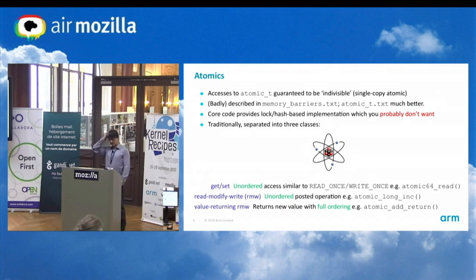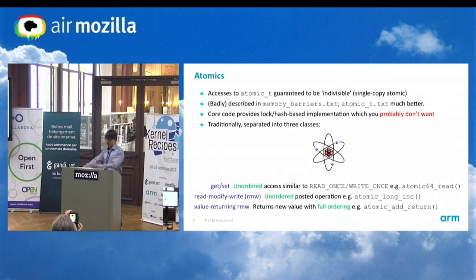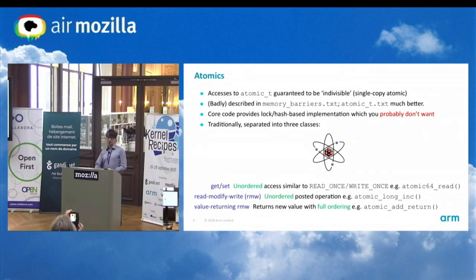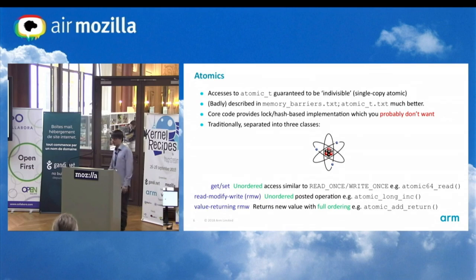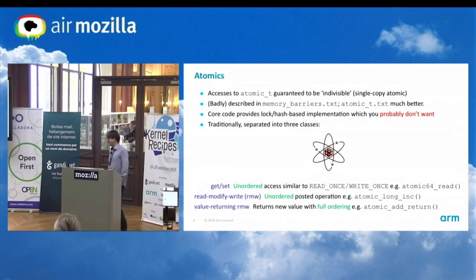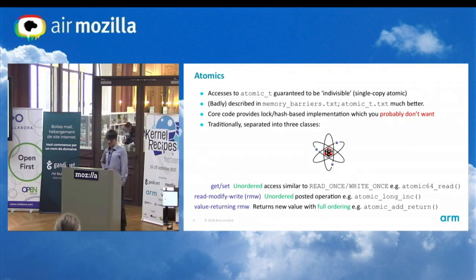The core code helpfully says atomics are hard — if you don't want to implement them in your arch code, it'll give you a generic implementation which is absolutely crap. You don't want that implementation. It's for architectures that don't have any atomic instructions — things like 32-bit SPARC and PA-RISC. I want to rip that code out but I have to keep it for PA-RISC. You don't want to use that code.